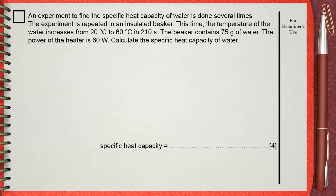This time, the temperature of the water increases from 20 to 60 degrees Celsius in 210 seconds. The beaker contains 75 grams of water. The power of the heater is 60 watts. Calculate the specific heat capacity of water.